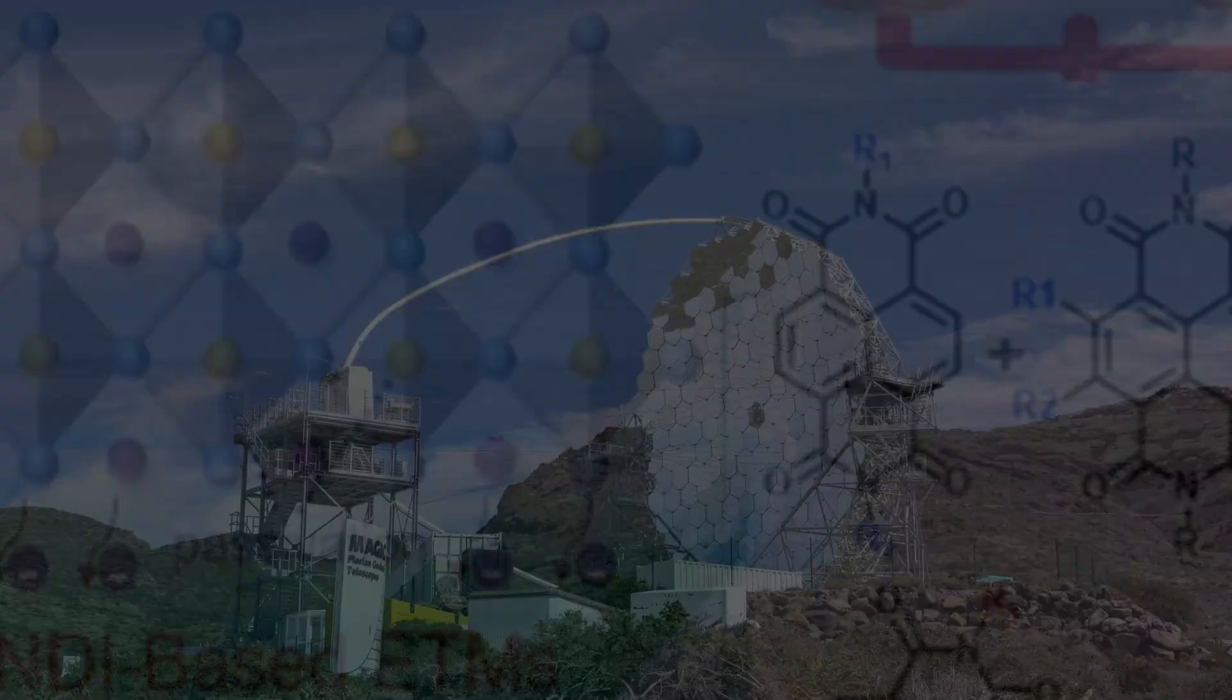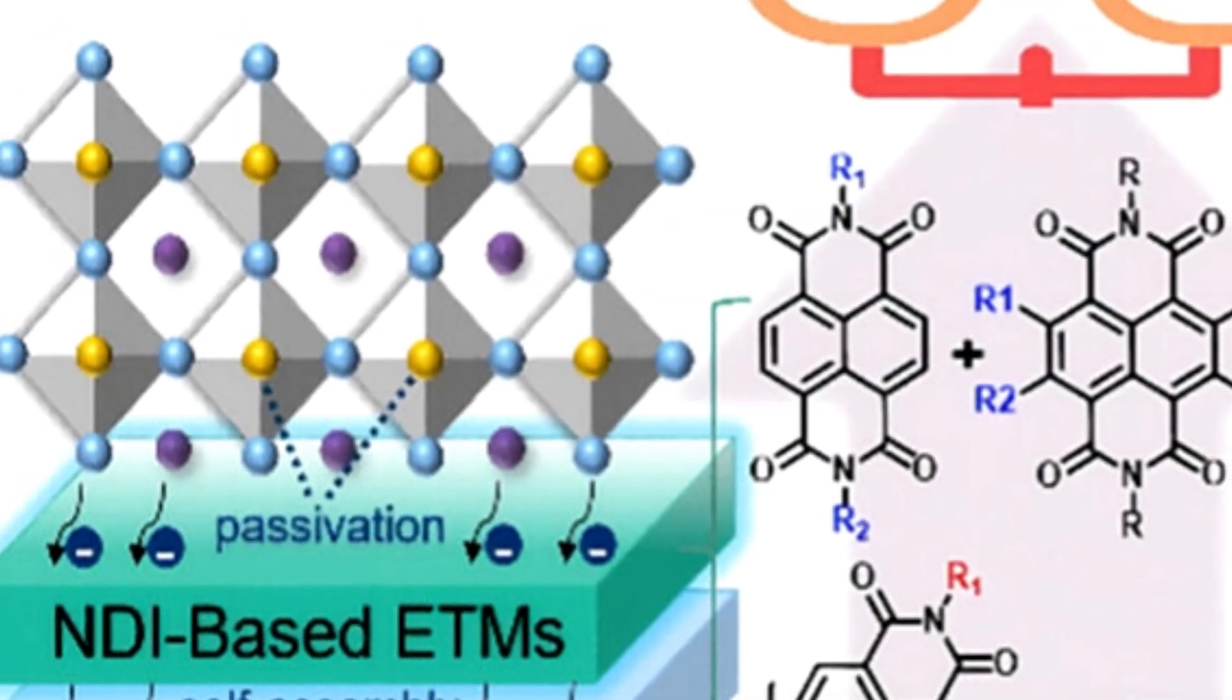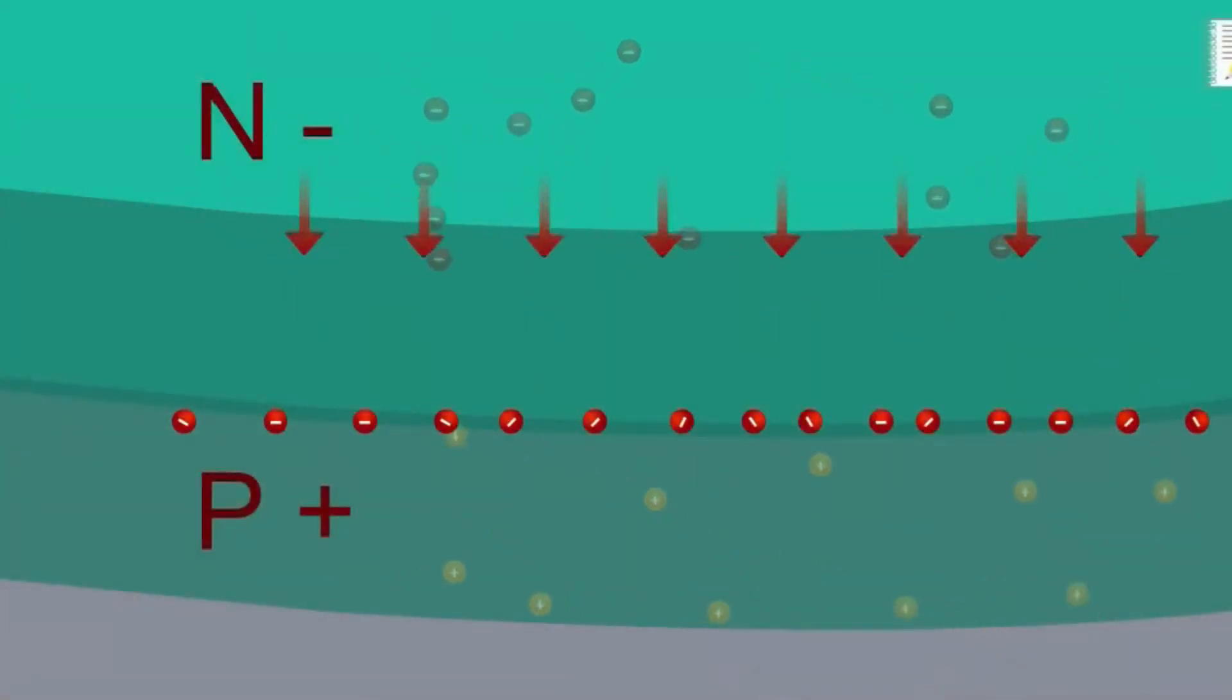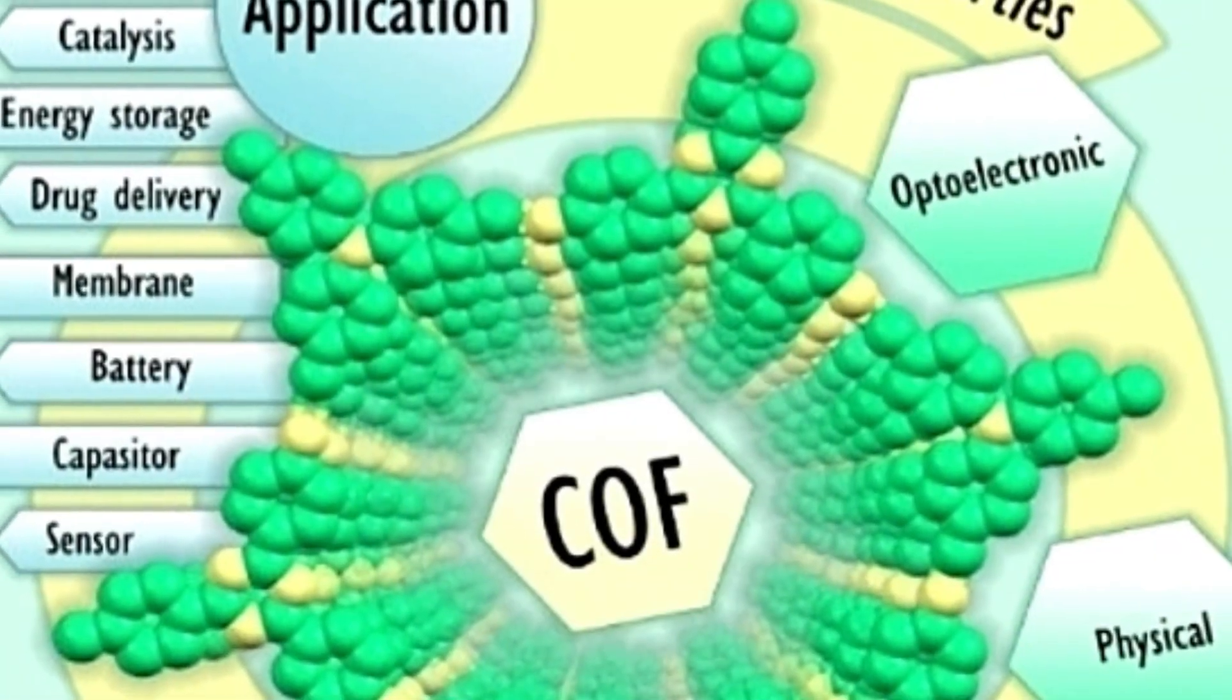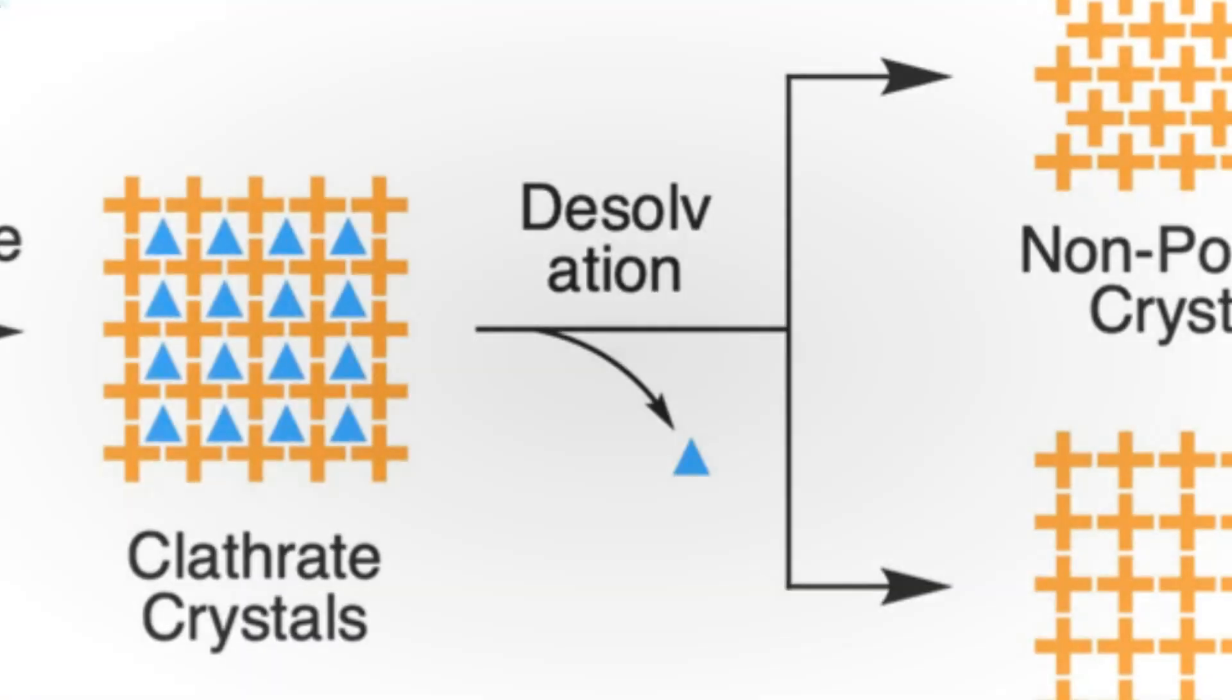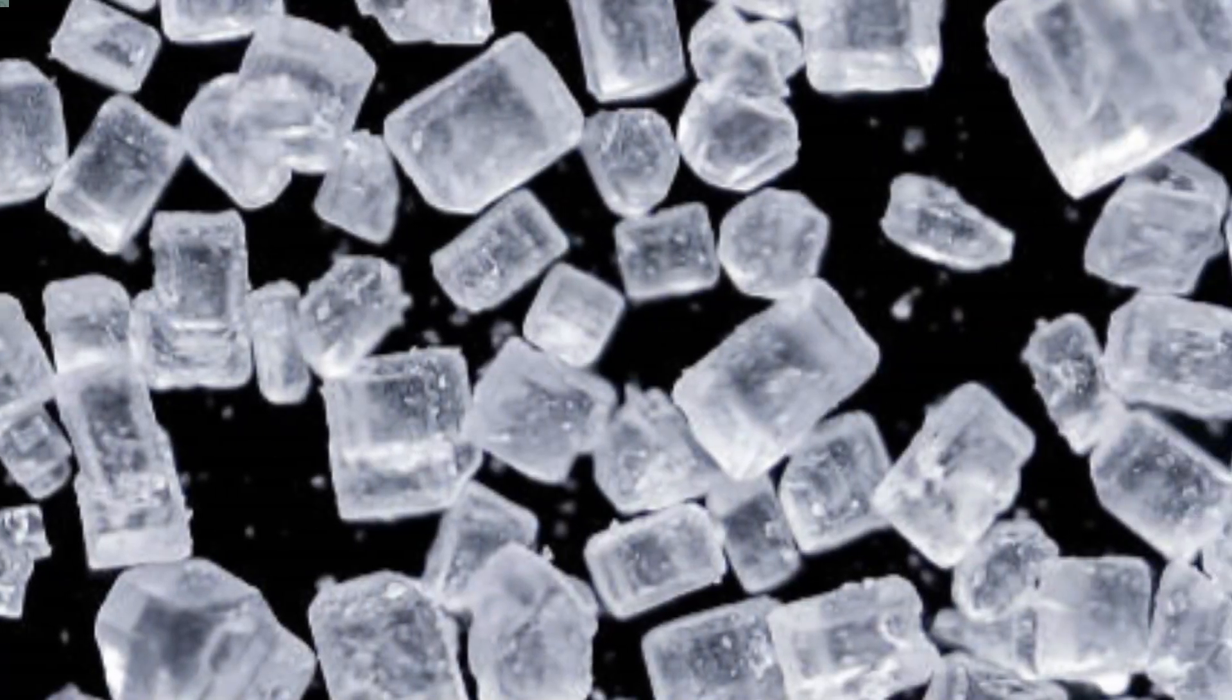Let's unpack the name first. NDI stands for naphthalenediimide, a synthetic molecule that's become increasingly important in energy research. It acts like an electron reservoir, absorbing and holding onto electrical charge. The COF part stands for covalent organic framework. Think of it like a superfine porous net made entirely from carbon-based compounds. These structures are both porous and crystalline, meaning they're full of tiny holes and are arranged in a very regular repeating pattern, sort of like sugar crystals under a microscope.